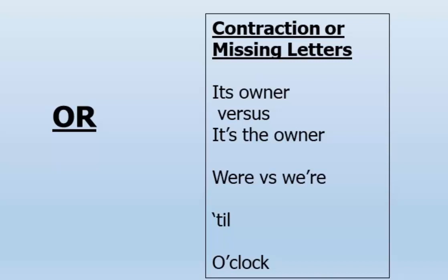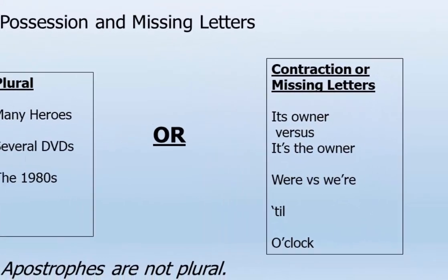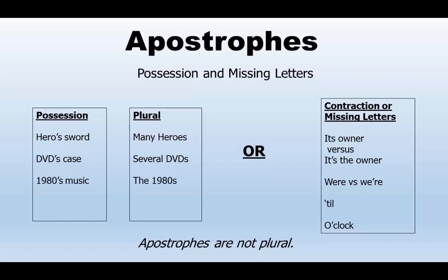'Till' is a word we use orally quite a bit, but it isn't correct for academic writing. It signifies 'until' — the U and N are missing, so you put the apostrophe and use ''til.' 'O'clock,' however, has been in use so long most people don't even know the contraction was invented because of clocks. 'O'clock' used to be said as 'of the clock.' To sum up: apostrophes are not plural. They signal possession and missing letters.